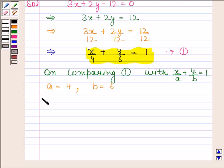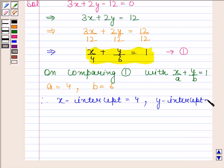Therefore x-intercept is equal to 4 and y-intercept is equal to 6. Hence the given equation in intercept form is x/4 plus y/6 is equal to 1. Its x-intercept is 4 and y-intercept is 6. This is our required answer.